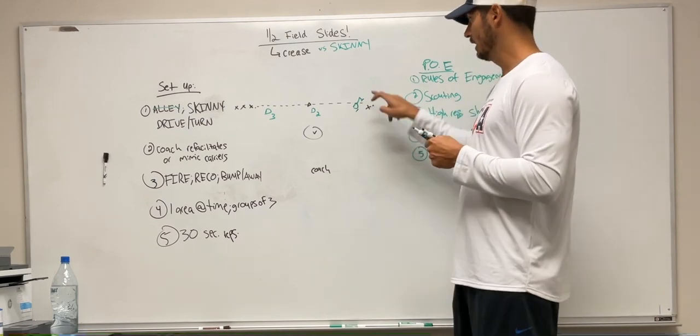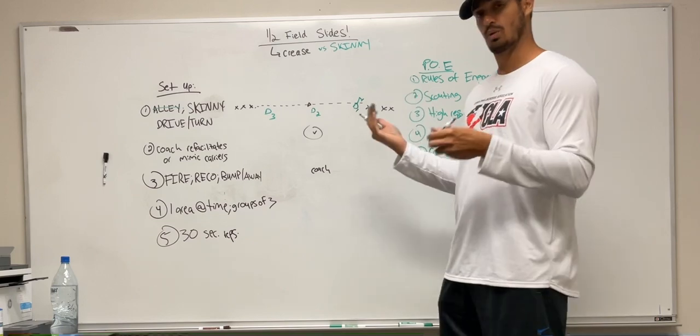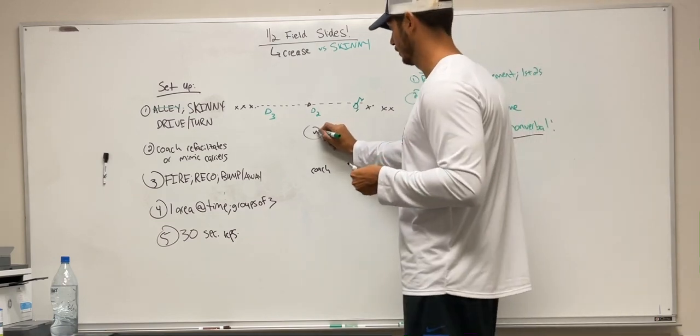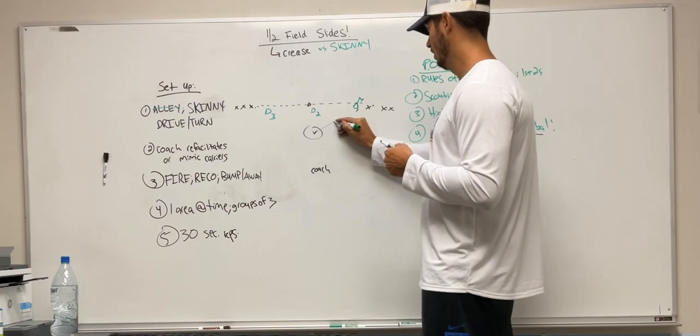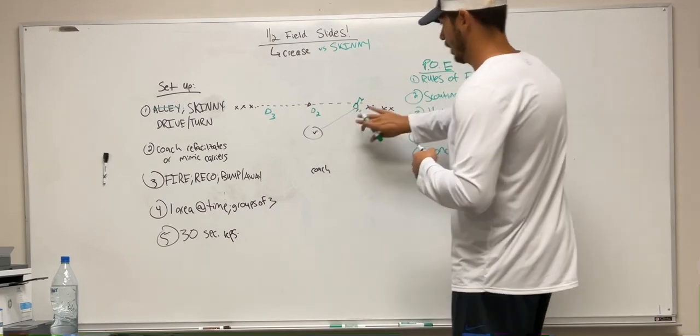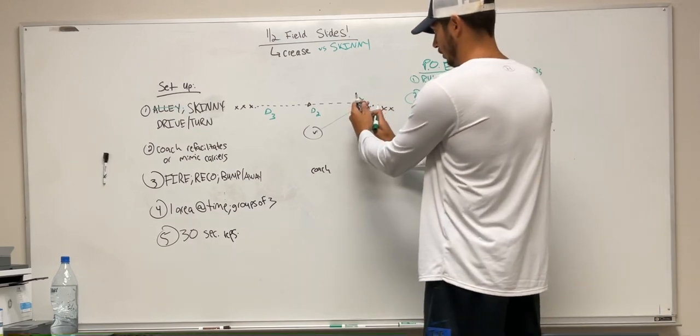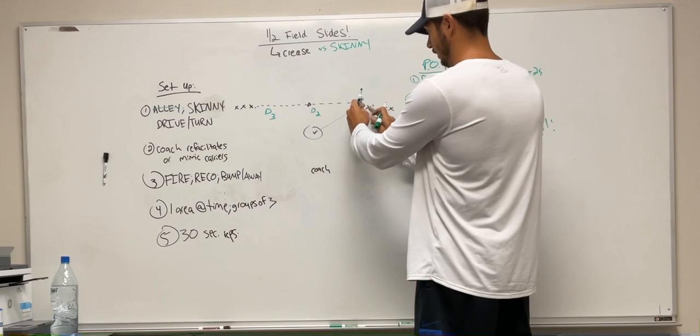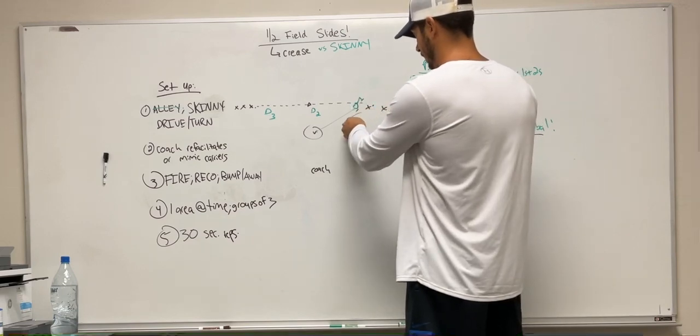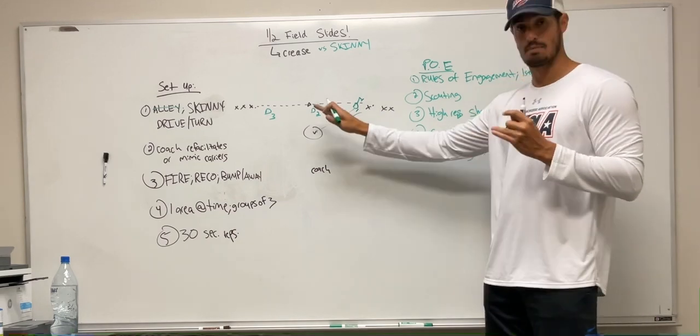Point of emphasis would be taking away the top side, the strong hand. And we call it skinny or squeeze. We want to imagine that this pipe right here has an imaginary wall like this. And our job defensively is to almost squeeze that ball carrier in between if this is a brick wall and that ball carrier wants to go in this direction.